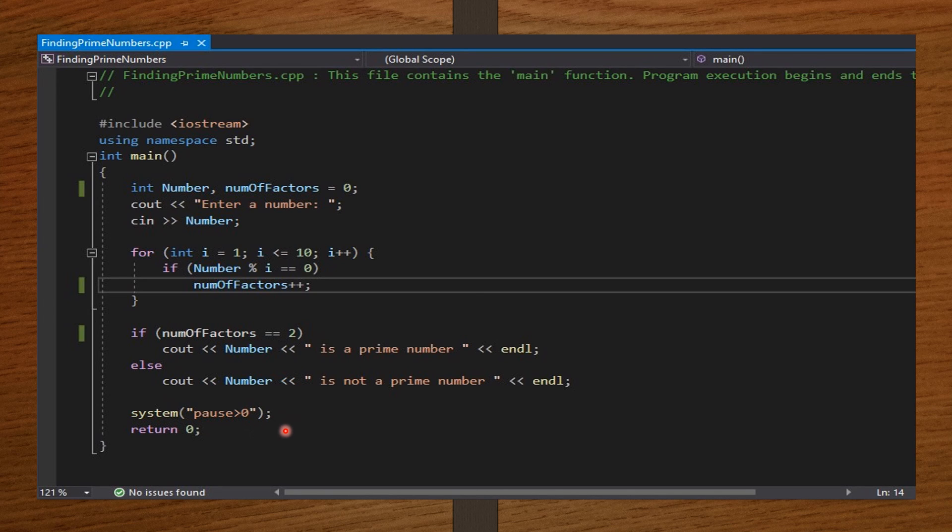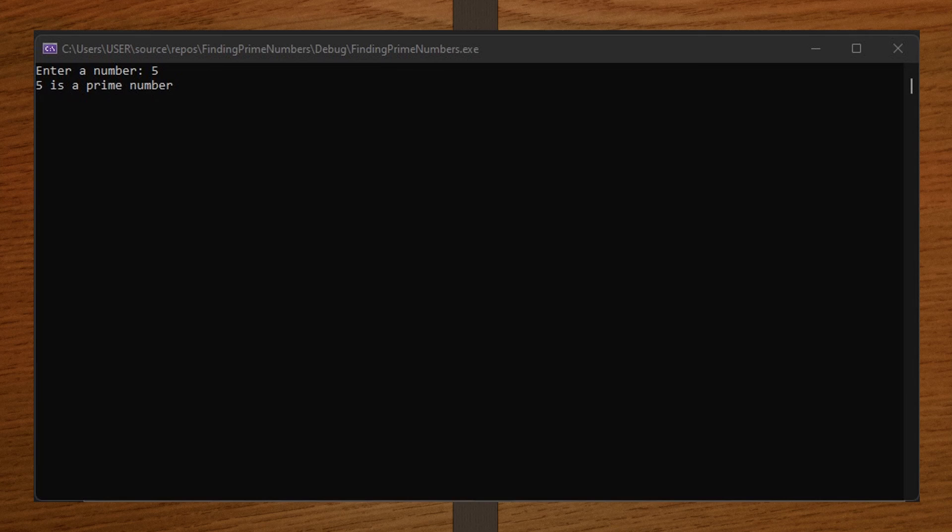So let me input a number and we're going to check if that number is a prime number or not. I entered five and it says that five is a prime number because five has only two factors, one and then five.